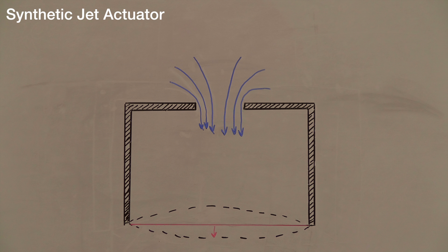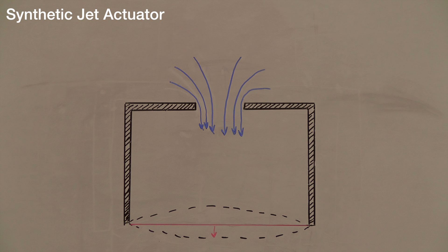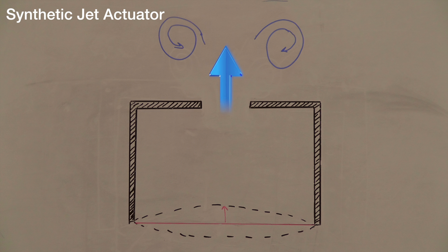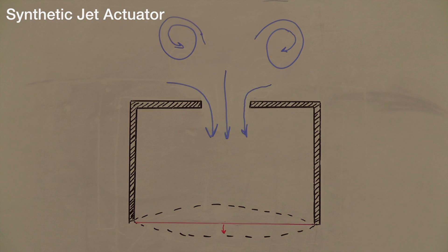As a diaphragm is pulled back it forces fluid into the cavity. As a diaphragm then changes direction it forces the fluid back through the slit. Due to fluid motion around an edge this results in the fluid rolling up into a vortex ring similar to that of a smoke ring. The vortex is then advected downstream and the process starts again.